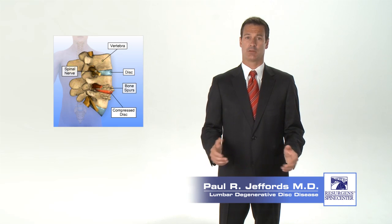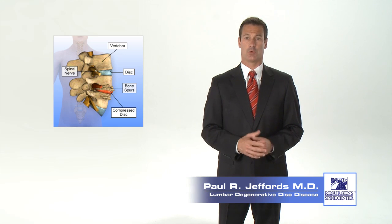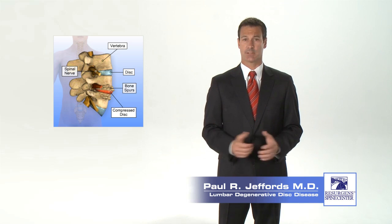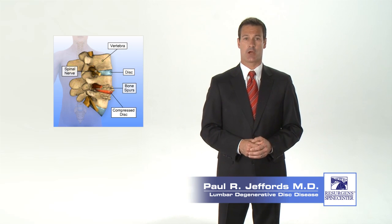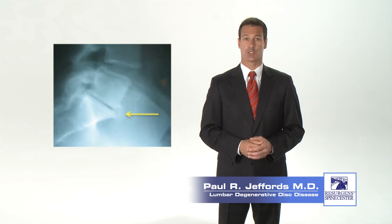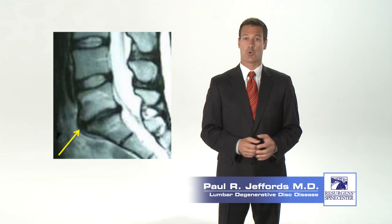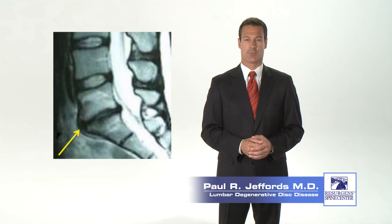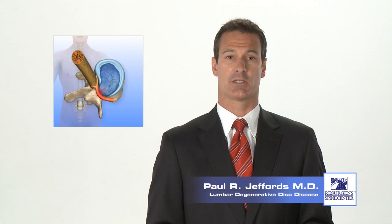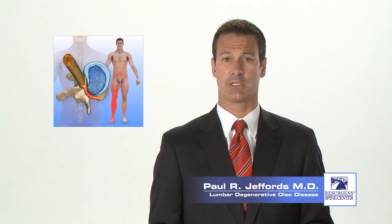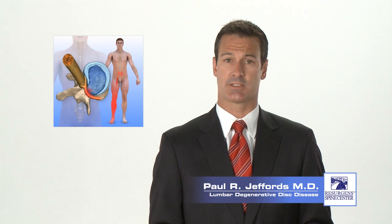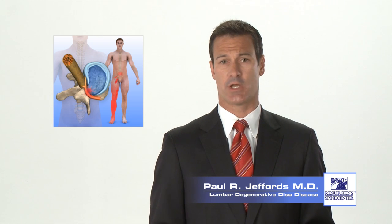With normal aging, the proteins and other materials within the inner gel or nucleus start to break down and lose their ability to hold water. As this occurs, the nucleus starts to dry out and slowly shrinks, and the disc will slowly flatten. On an x-ray, this will show up as narrowing of the disc space between the vertebrae. On an MRI scan, the normally white appearing disc will slowly darken, eventually turning black as it degenerates and loses water. During this process, the nucleus loses its elasticity and ability to absorb shock. As this happens, the outer annulus has to absorb more of the stress.